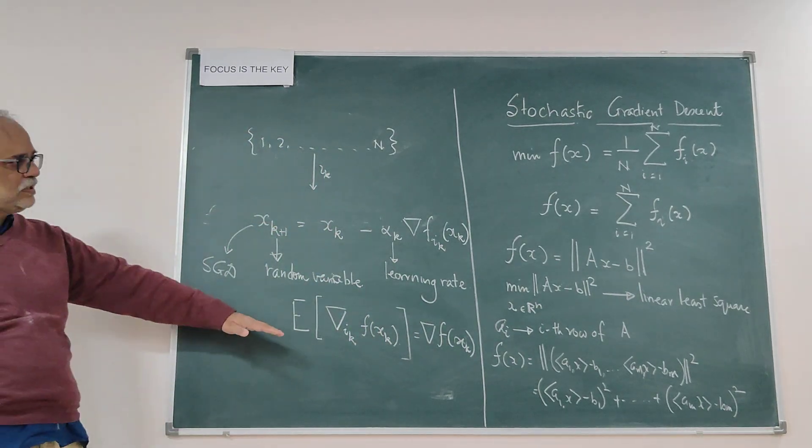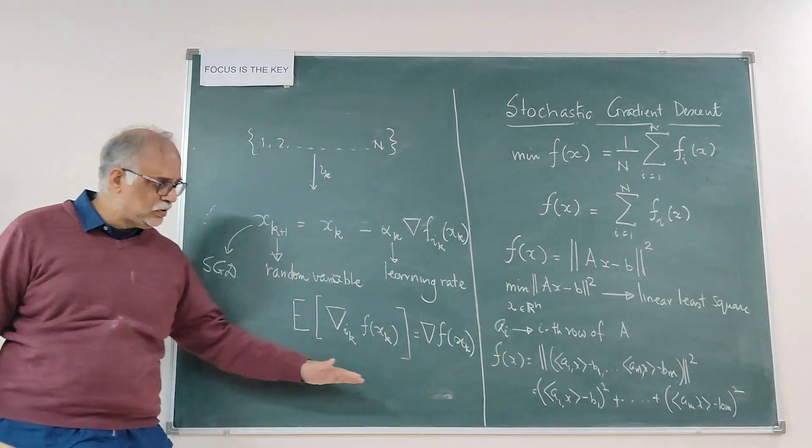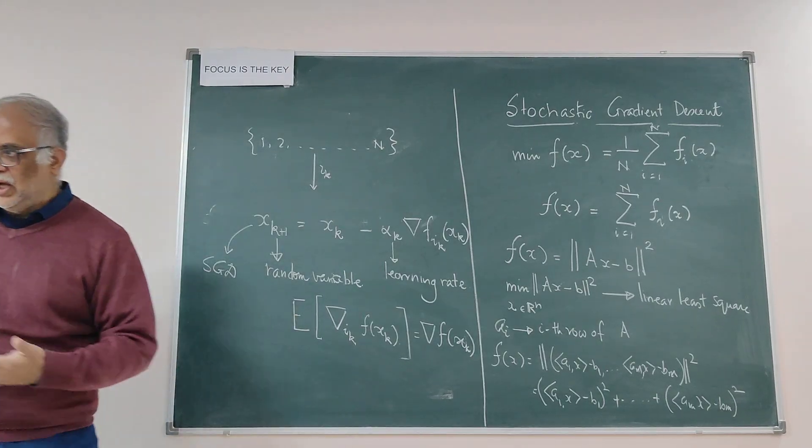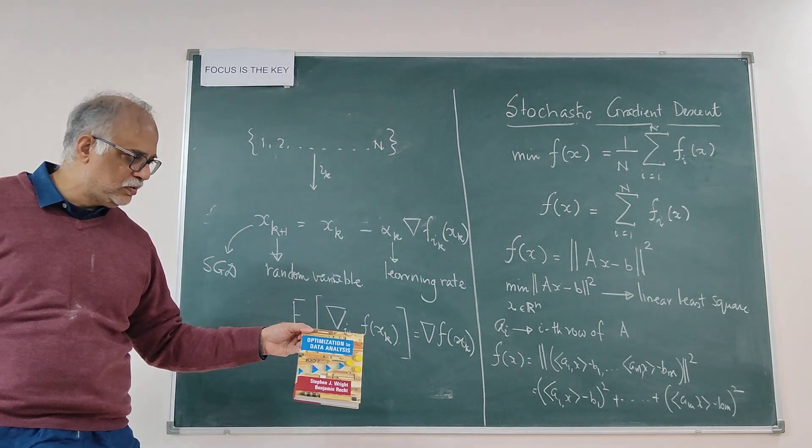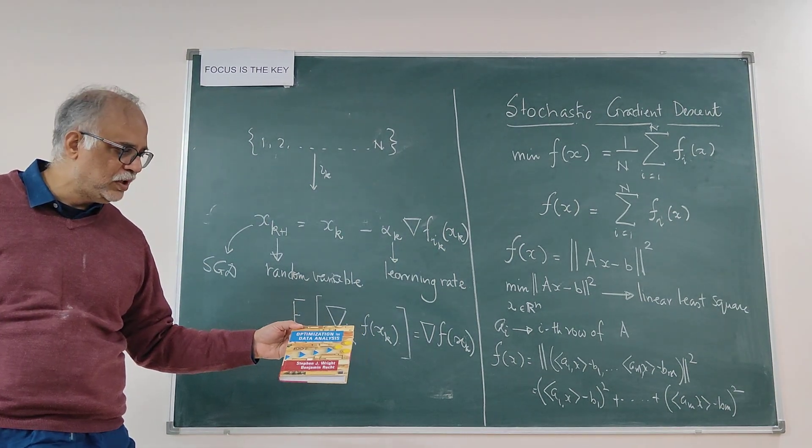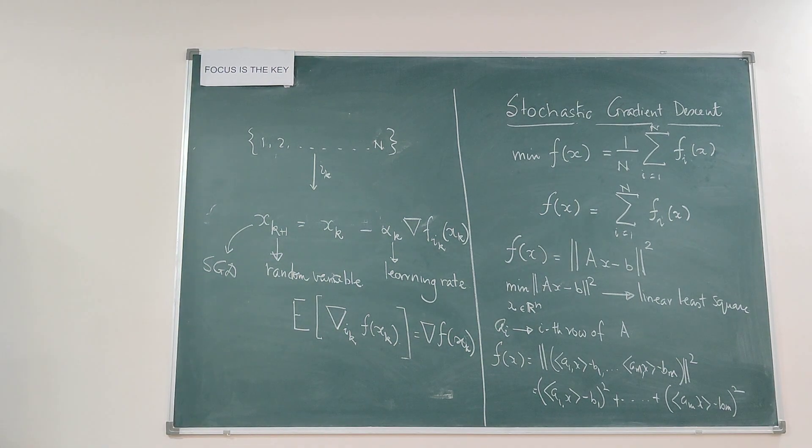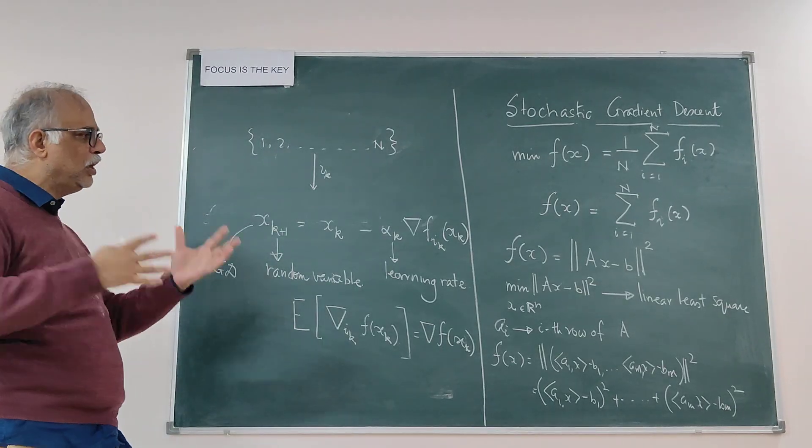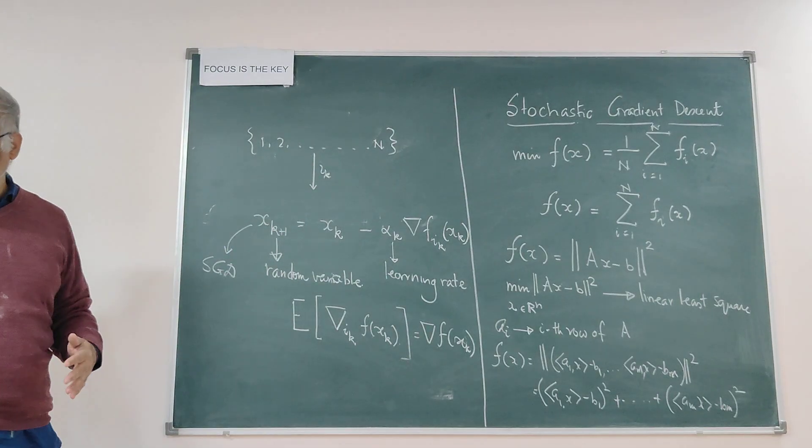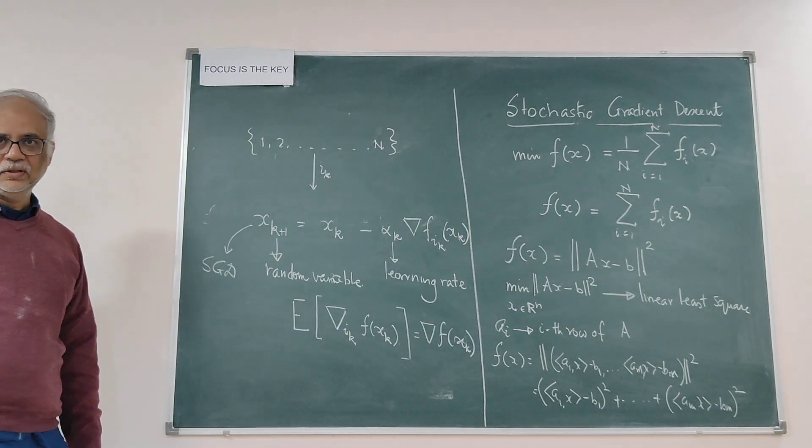This is the basic idea of stochastic gradient descent method. One of the very good books which writes about this is Optimization for Data Analysis by Stephen Wright and Benjamin Recht. As we progress through the algorithm, in the second part I will give you a more detailed idea about how the method is carried out, and then we will go to the algorithm in that paper. So let's stop this now.